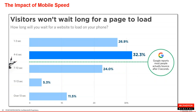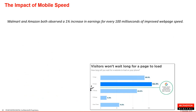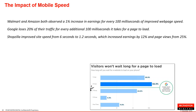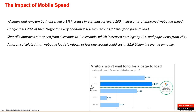Walmart and Amazon both observed a 1% increase in earnings for every 100 milliseconds of improved web speed — and when these organizations earn billions or hundreds of billions of dollars online, that 1% is well worth the investment. Google themselves lose 20% of their traffic for every 100 milliseconds a page takes to load. Shopzilla improved earnings by 12% and page views by 25%. Amazon estimated the cost of one second of slowdown at $1.5 billion of revenue annually — one second equals one and a half billion dollars.